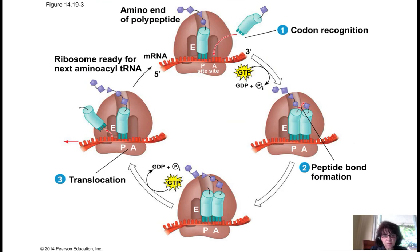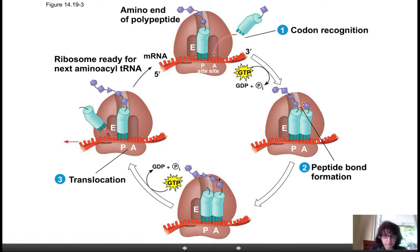Here's a schematic of what happens — we'll watch an animation. The new tRNA with an amino acid comes into the A site. We use a GTP to make the peptide bond. Now the P site is empty. We use a GTP to move everybody over — the ribosome literally bounces down the mRNA. The growing chain is now on the A site, the E site tRNA leaves, and then we start over again.